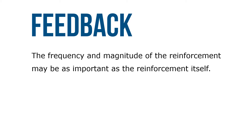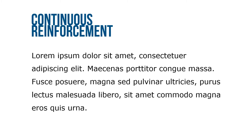Two major classifications are continuous and intermittent. With continuous reinforcement, each desired and undesired behavior is reinforced. Examples of this method would include a machine with an automatic counter that lets the employee know exactly how many units have been produced, or a supervisor who punishes employees for breaking rules every time.